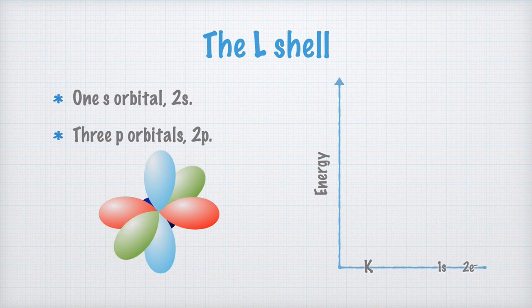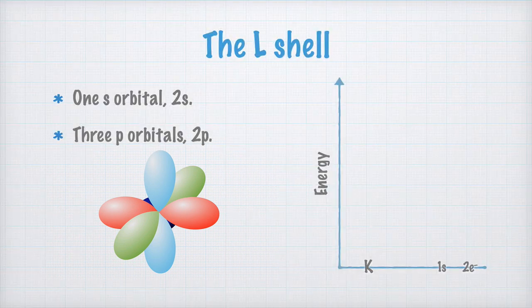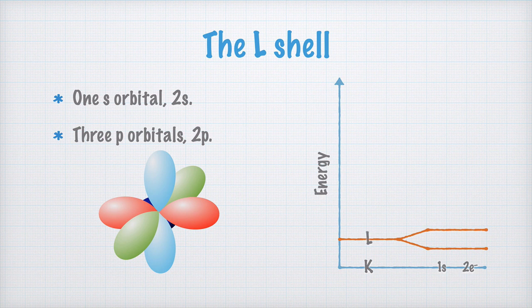I draw them like this for two reasons. First of all, they're hopefully quite easy for you to copy to your notes. Second, I want you to note how they are oriented along the x, y, and z-axis, perpendicular to each other. Now, let's draw this in our diagram too. The L-shell contains orbitals on two different energy levels. There's the 2s orbital down here, and the 2p orbitals here.